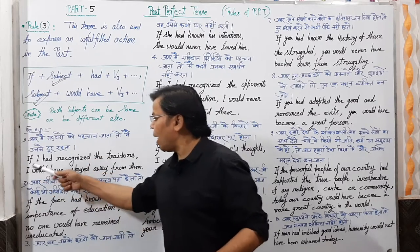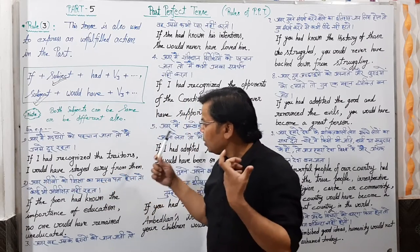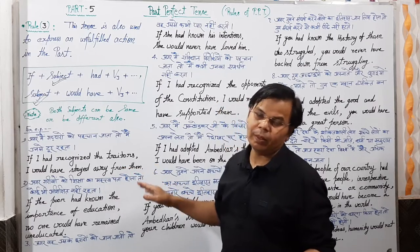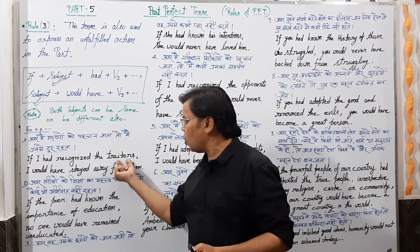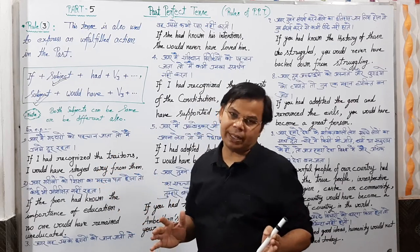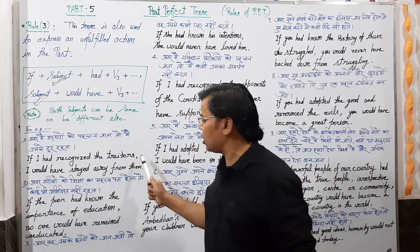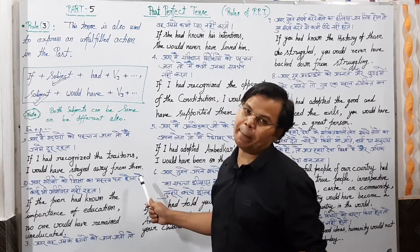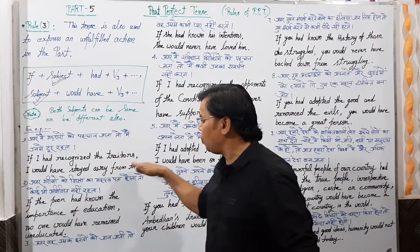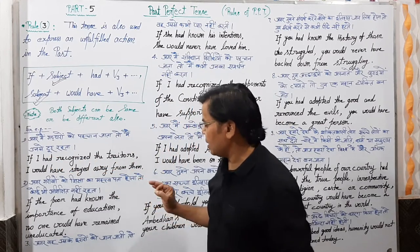If I had recognized the traitors, I would have stayed away from them. दुबारा सुनिए — if I had recognized the traitors, I would have stayed away from them.